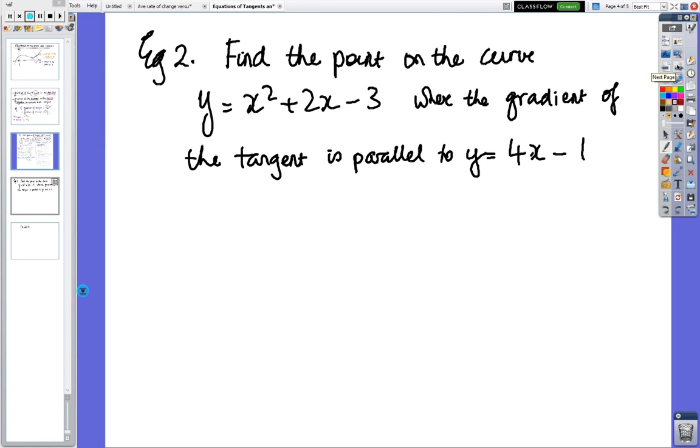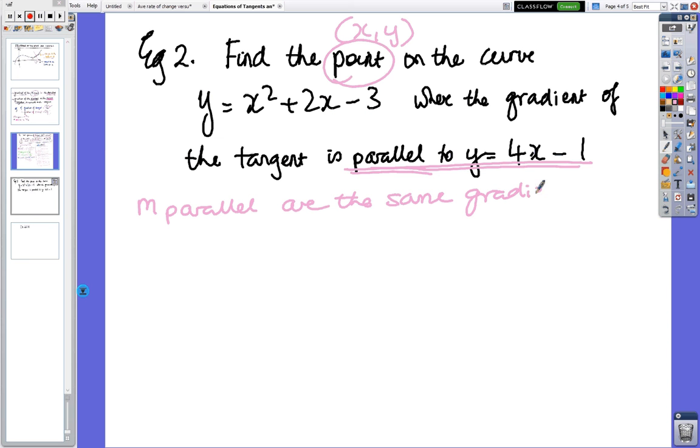So let's have a look at this question. So example 2. Find the points. So finding the point means we're looking for an answer that has just x comma y on the curve, where the gradient of the tangent is parallel to this line and we don't know what the point is. So if it was going to be parallel, they're the same. Same gradients. Same. So that means that m equals 4. That's the gradient of the line.